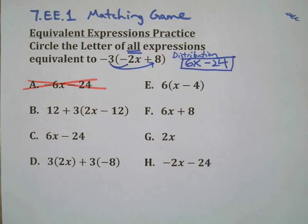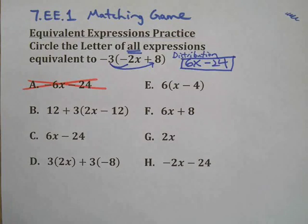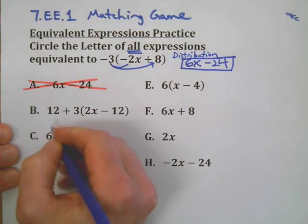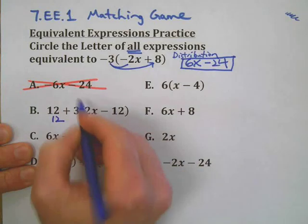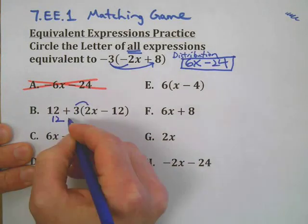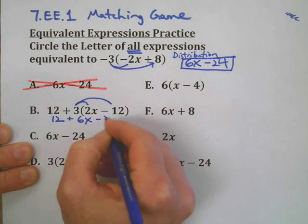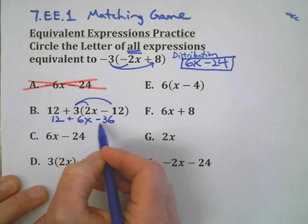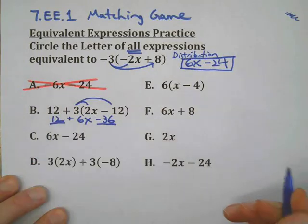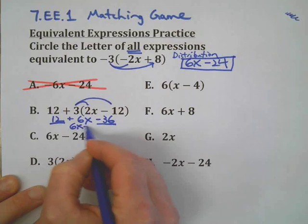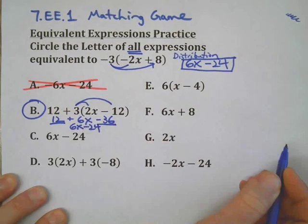Now that you've had a chance to do it yourself, I feel a little better. Sorry, I just got excited and wanted to get busy. Okay, choice B: the 12 stays, 3 times 2x equals 6x, and 3 times negative 12 is negative 36. Putting negative 36 and positive 12 together gives 6x minus 24 — so B is a yes, that's a match.